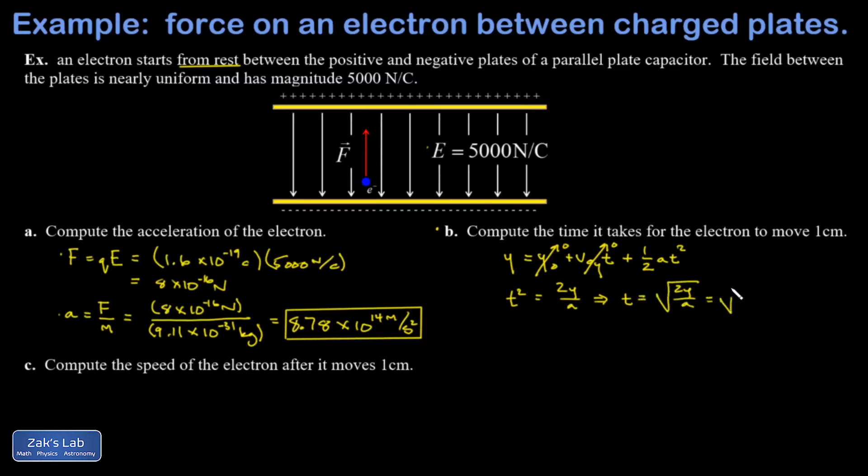I can plug in my numbers and I get a time out of this. When I crunch the numbers, I get 4.77 times 10 to the negative 9 seconds. It'd be convenient to express this in nanoseconds, that's a billionth of a second, so this is 4.77 nanoseconds.